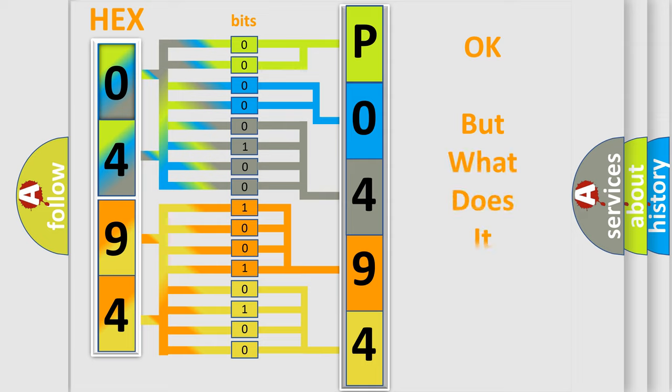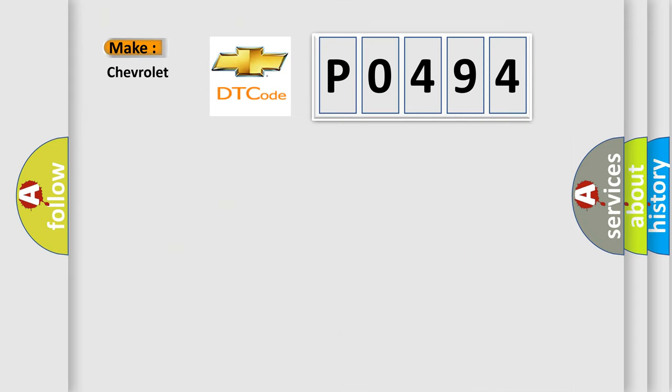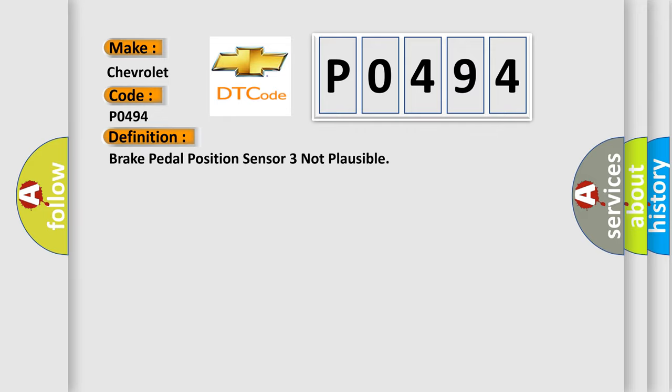The number itself does not make sense to us if we cannot assign information about what it actually expresses. So, what does the diagnostic trouble code P0494 interpret specifically for Chevrolet car manufacturers? The basic definition is brake pedal position sensor 3 not plausible.